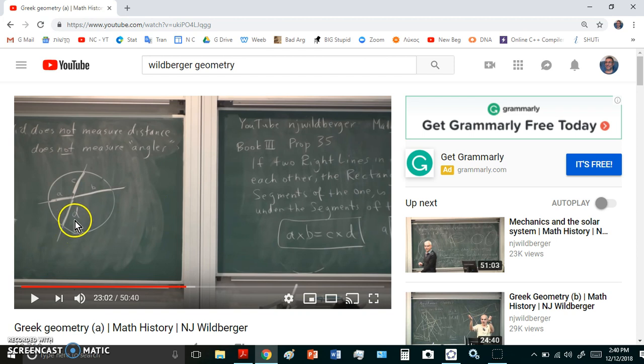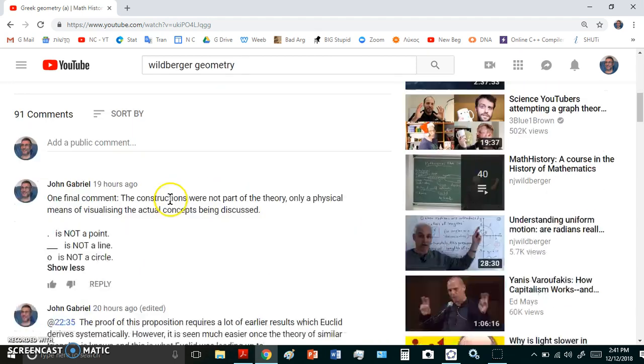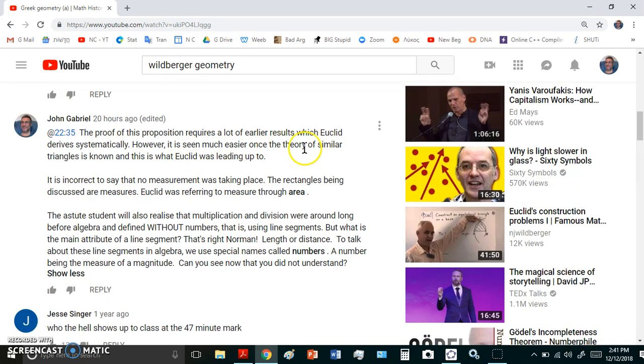He thinks that just because they used rectangles, they weren't really measuring. But the way a rectangle or a plane number was defined is a measure. And when Euclid used a rectangle in his proofs, he was referring to the property of area. So measure was taking place, contrary to what Wildberger says. And let's go over my comment very quickly. The proof of that proposition requires a lot of early results, which Euclid derives systematically. However, it is much easier seen once the theory of similar triangles is known. And this is what Euclid was leading up to. So it's incorrect to say that no measurement was taking place. The rectangles being discussed are measures. They're measures of area. Euclid was referring to measure through area. The astute individual realized that multiplication and division were around long before algebra and defined without numbers.